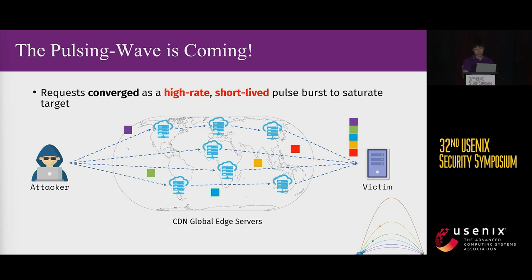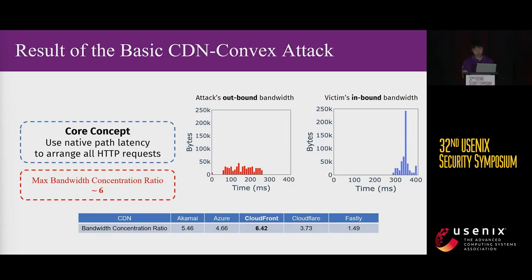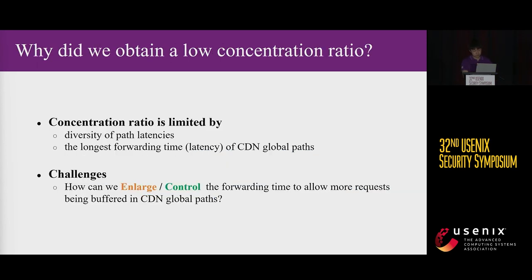In our paper, we present one basic attack and four enhanced attacks. In the basic attack, the attacker synchronizes the flight time of each HTTP request solely using the pre-measured path latency. As shown in the diagram, the red area on the left represents the attacker's outbound bandwidth, while the blue area on the right represents the incoming traffic received by the victim. The results indicate that the bandwidth concentration ratio for the basic attack is only six. We found that the primary factor limiting the ratio is the longest forwarding time.